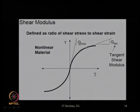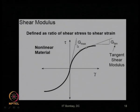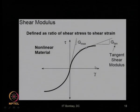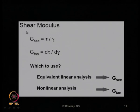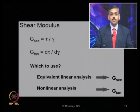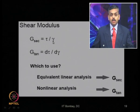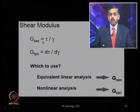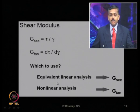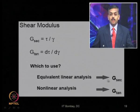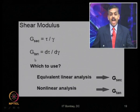G_max is also called the initial tangent shear modulus, as it is the slope at the initial point of the curve. For equivalent linear analysis, we use the secant shear modulus G_secant, which represents the non-linearity approximately by treating it as an equivalent linear system. When we plot G/G_max on the y-axis versus cyclic shear strain on a log scale on the x-axis, we get the modulus reduction curve, showing that as cyclic shear strain increases, the shear modulus reduces.